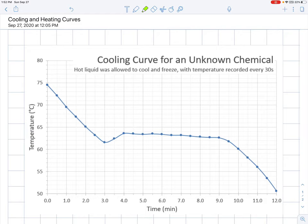So to begin with a cooling curve, here we have one for an unknown liquid. We started with a hot liquid in a test tube. A thermometer or a temperature sensor was placed into the liquid, and we allowed it to cool down.